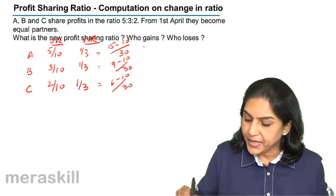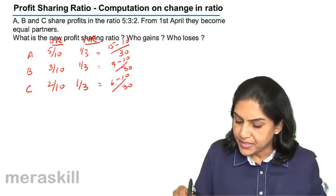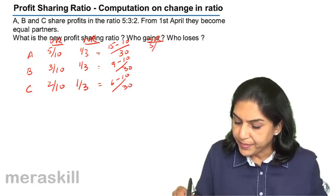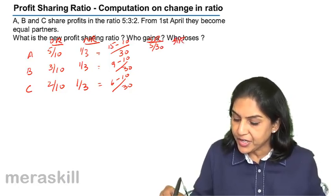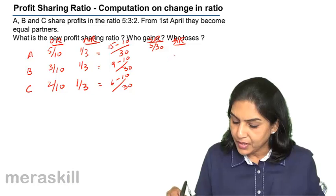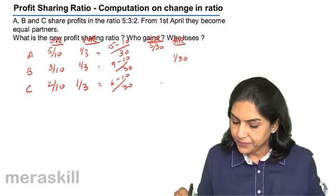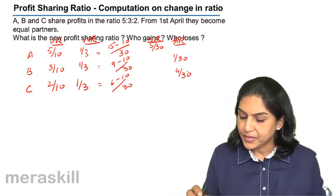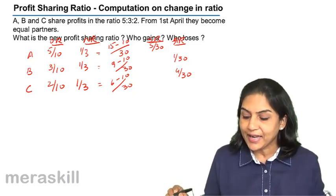So what we get here is 15 minus 10. This is a sacrificing ratio of 5 by 30. Since this is negative, this is actually a gaining ratio. And 4 by 30. I say 9 minus 10, I get minus 1. So I have put it under gaining ratio.